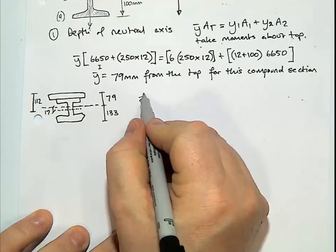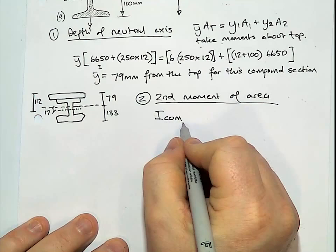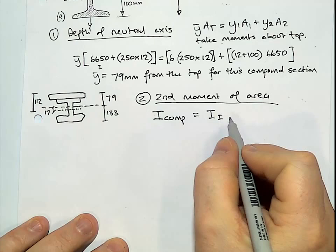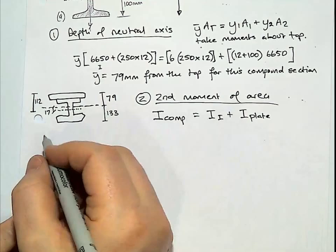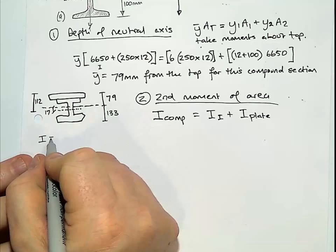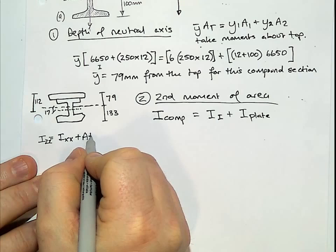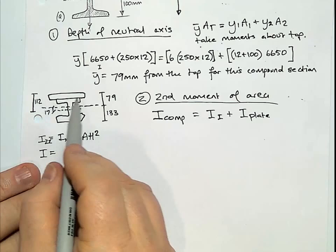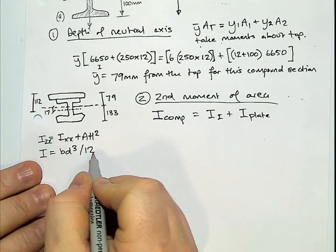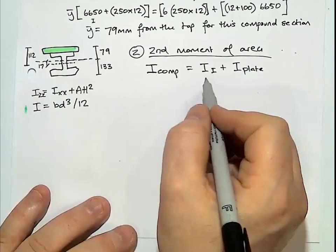Two, second moment of area. To work out the second moment of area for the compound section, it's the second moment for the I plus the second moment of the plate. We'll use our formula from our handout. So we've got the parallel axis theorem, which is like Izz is Ixx plus Ah squared. And we've also got, for a rectangular shape, when we look at the plate, we've got the Bd cubed over 12.